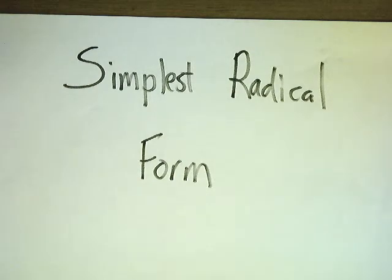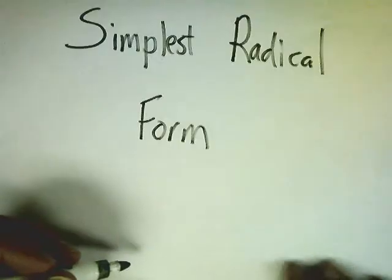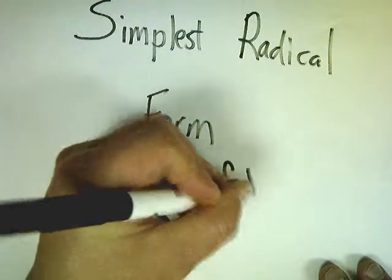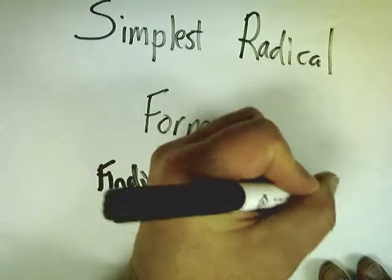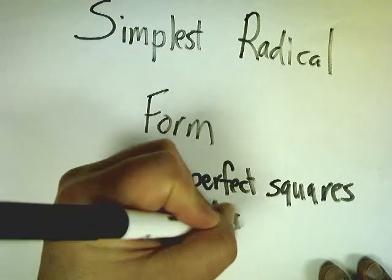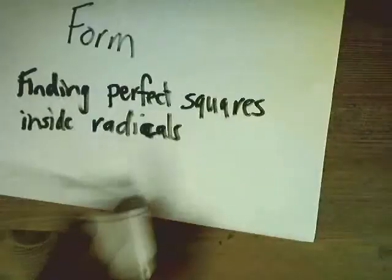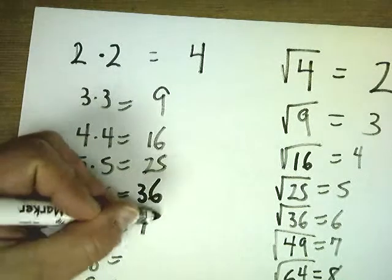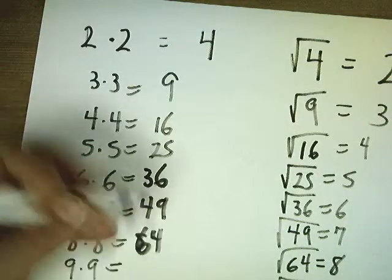In order to do that, the first thing we need to do is figure out what the squares are. When I say squares, I mean what's the square root of 4? What's the square root of 9? Because simplest radical form involves finding perfect squares inside radicals. This is referred to as a radical — it's a square root. Sometimes there are squares hidden right underneath those things, and we need to pull those things out. They're not supposed to sit there.